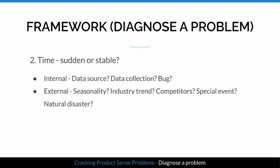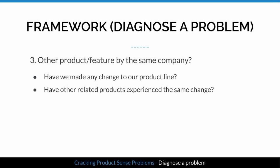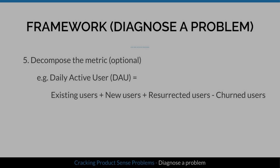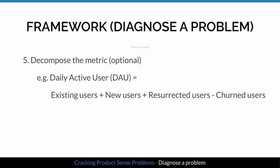Also consider external factors like seasonality, industry trends, whether competitors ran a marketing campaign recently, or whether there was a special event or natural disaster around the same time. Third, check whether other products or features by the same company experienced the same change. Then segment by user demographics and behavioral features — region, language, and platform — to see if the decline was isolated.